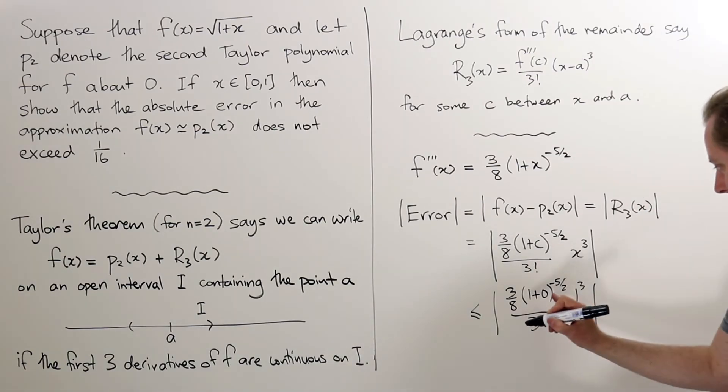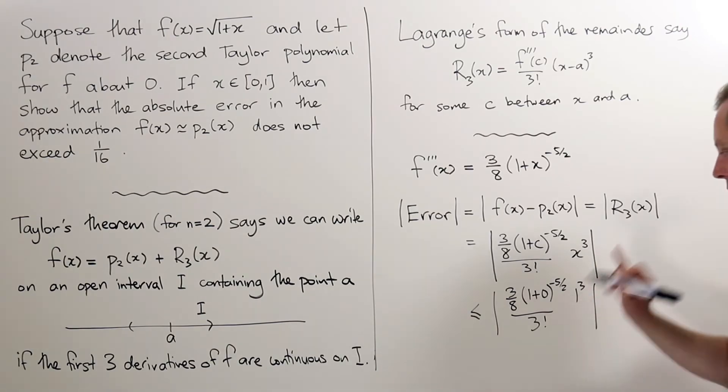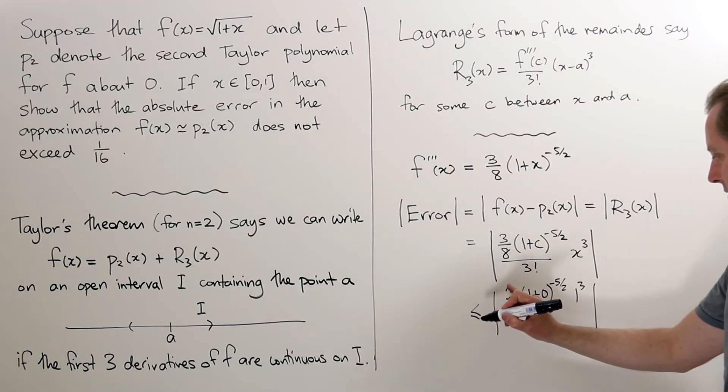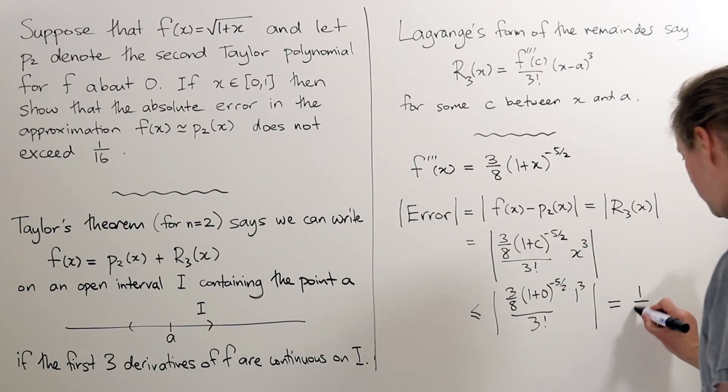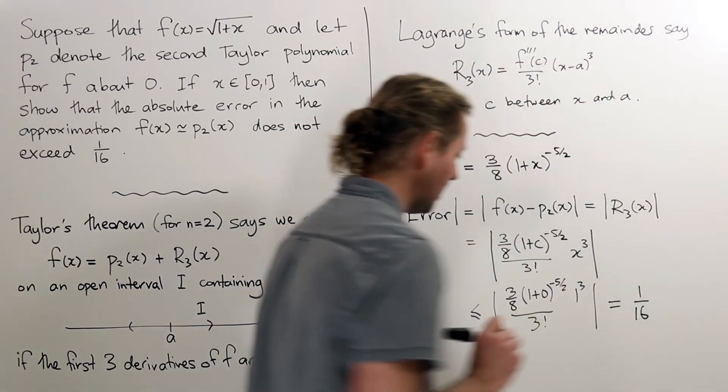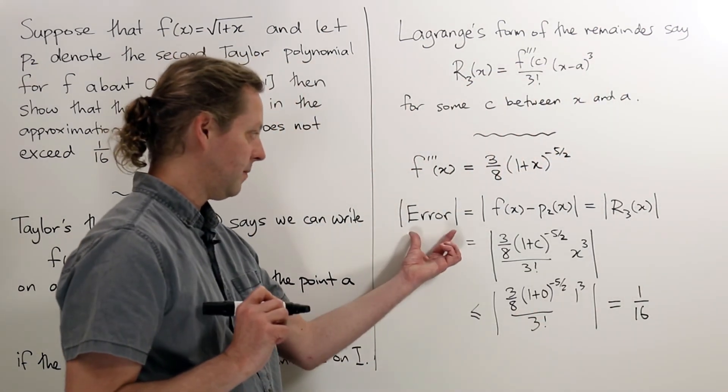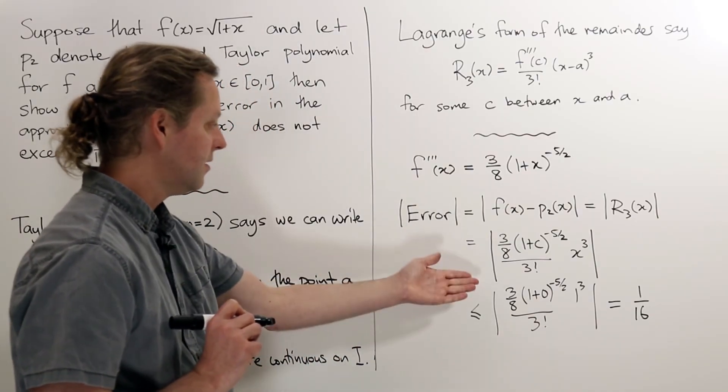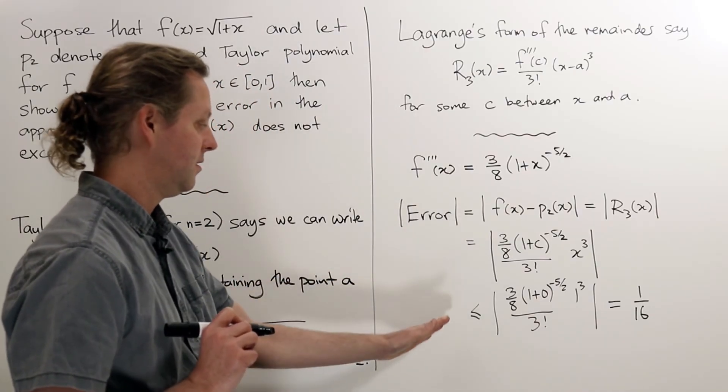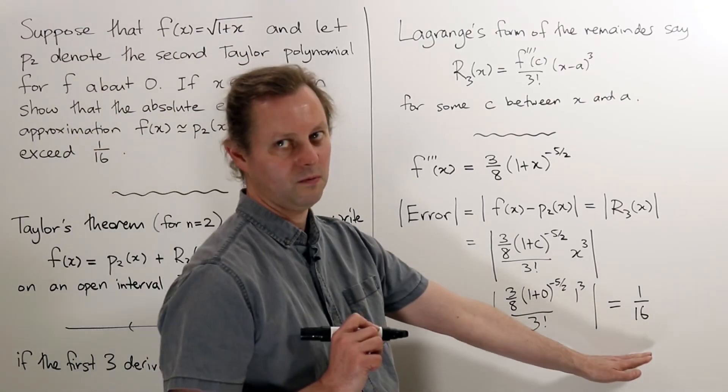And when you work this out, this of course is 1, that's easy. This is 1 and this is a 3 and the 3 cancels, and we're left with 1 over 8 divided by 2, so this is precisely 1/16. And so we've shown that the error, the absolute value of the error, whatever it is, we don't know precisely what it is, it is certainly less than or equal to 1/16.